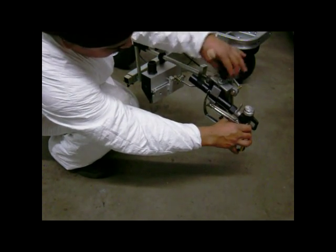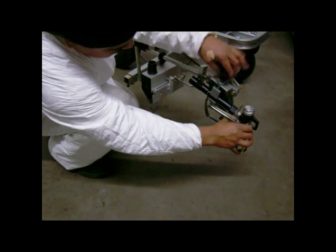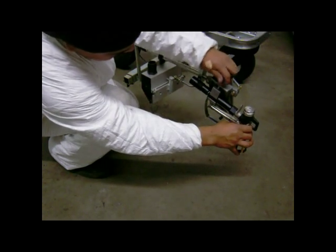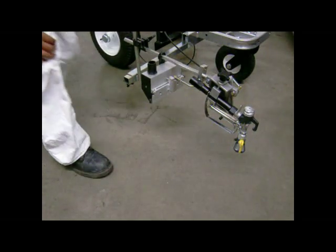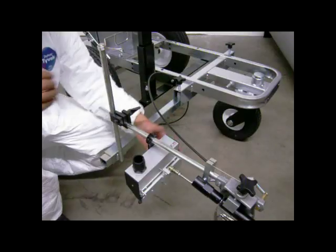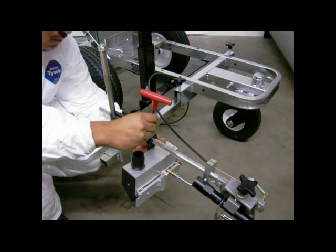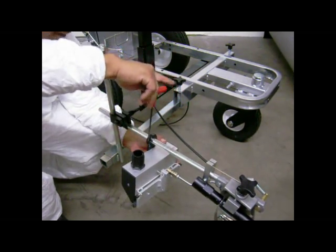Install the striping gun into the gun holder and ensure that the bead dispenser door is in the closed position. Secure the glass bead dispenser mounting bracket to the support arm by tightening the shaft collar onto the gun arm.